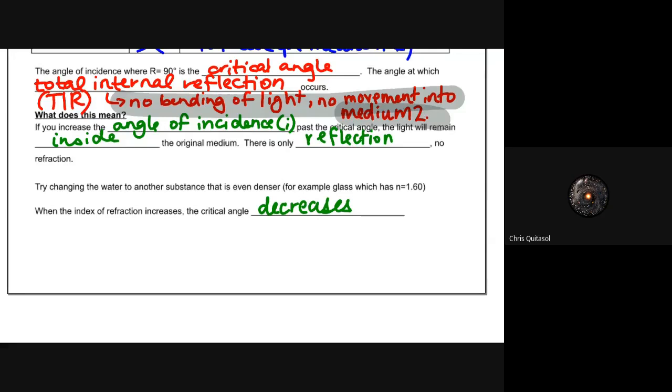So what does this mean in terms of the angle of incidence? Well, if you increase the angle of incidence or I, past that critical angle, the light will remain inside the original medium. So it will not move from medium one to medium two.